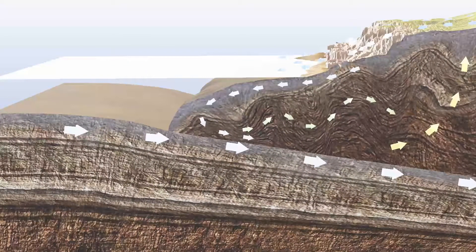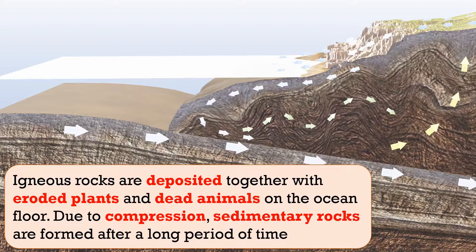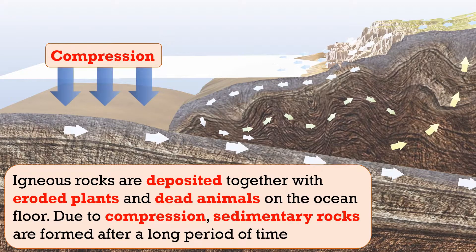As fragments of rocks get transported into the sea, they will be sedimented together with dead plants and organisms under the sea. This process will repeat over a long period of time, and the ocean bed will soon be covered by layers of rocks, dead plants and dead animals. Due to compression, all of them will be compressed and pushed underground, which forms sedimentary rocks after a very long period of time.